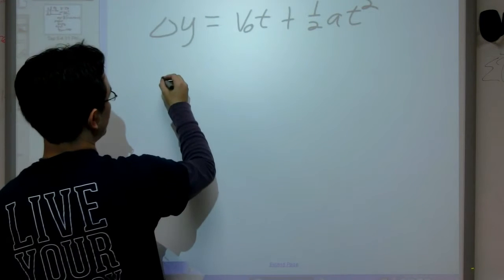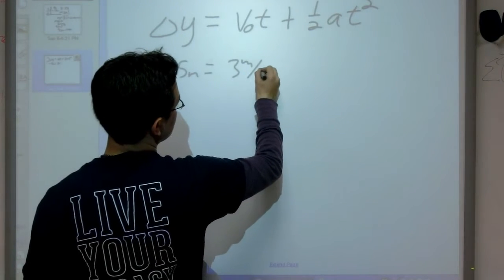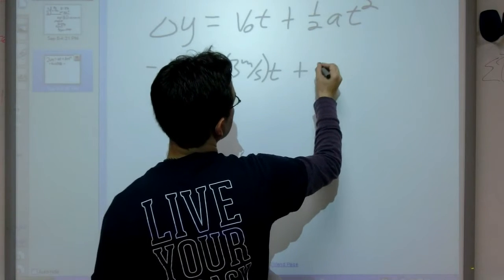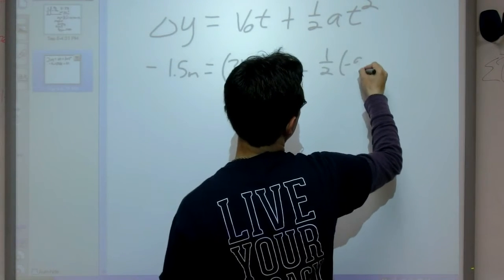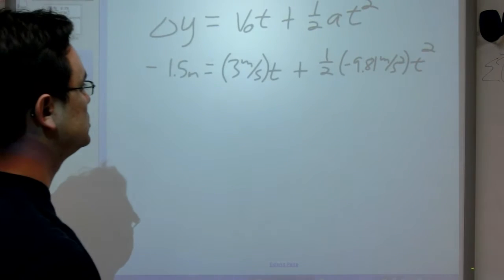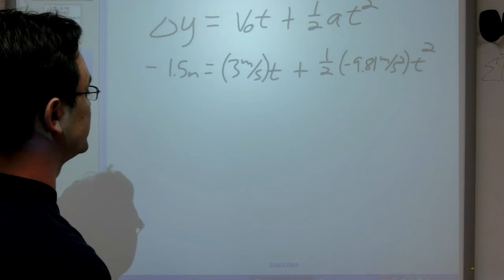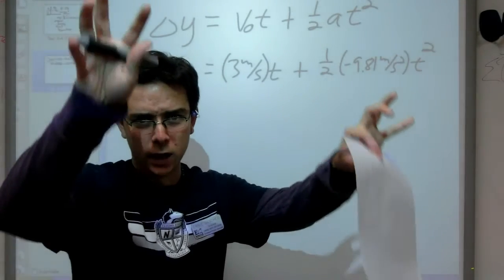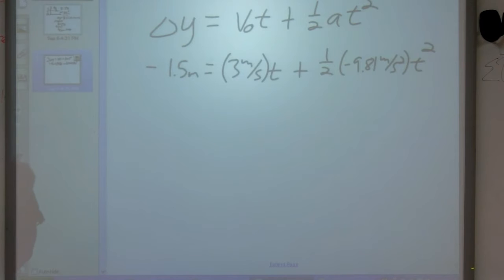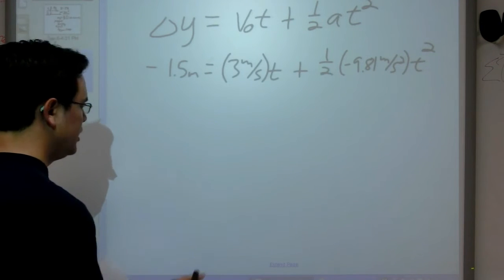So if I put some of my numbers in here, negative 1.5 meters equals 3 meters per second times time, plus one-half negative 9.81 meters per second squared times time squared. Uh-oh. We don't have any convenient zeros like we have in the past. In fact, that looks like a quadratic, or as I like to call it, a QUAAADRATIC. I don't like those. Let's see if we can bypass that, because we could probably put it into a calculator or plug it into the quadratic equation and get an answer, but I'd like to avoid that. Quadratics are kind of a pain.